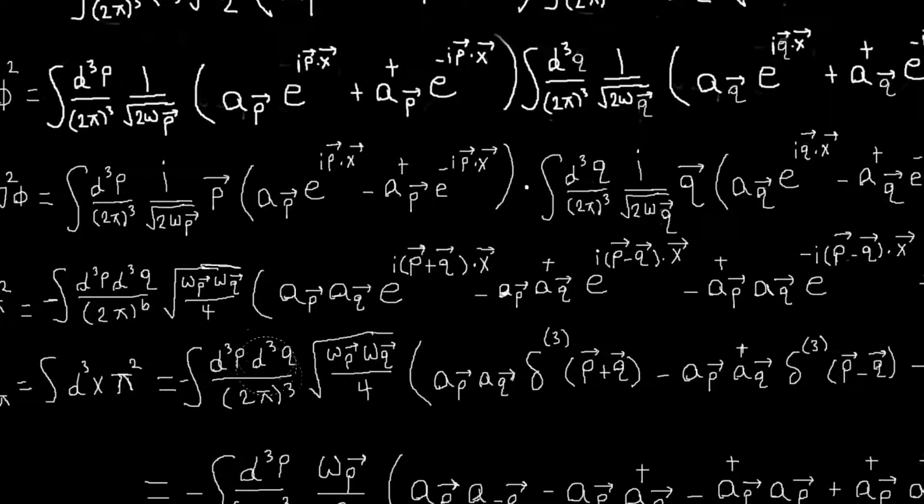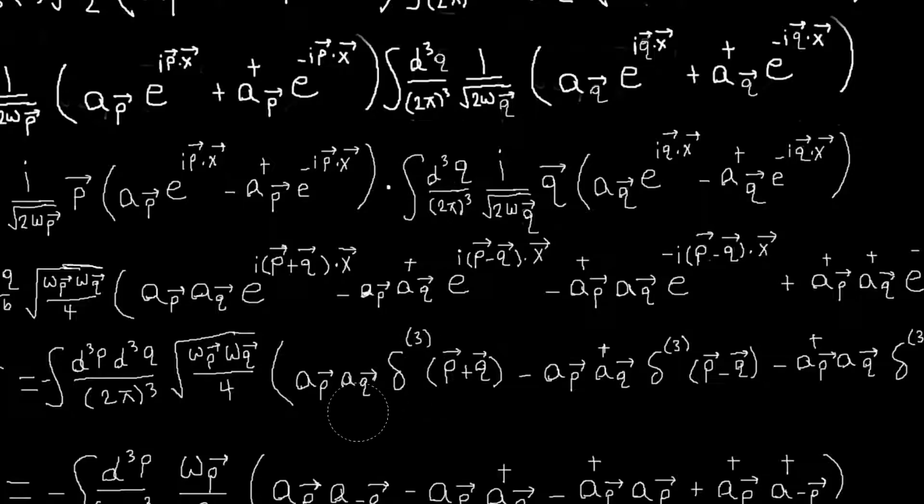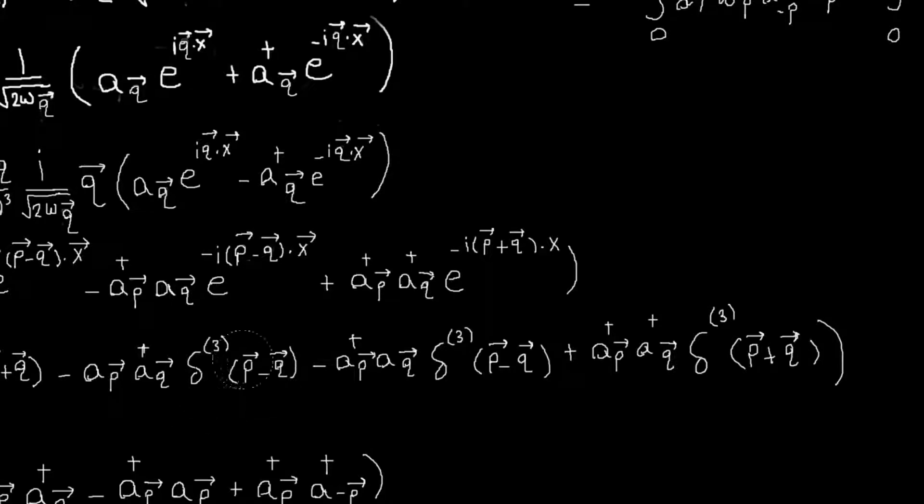And so now that we have this delta function here, each of these terms, we can do the integral over q and just replace. So in this term we'd replace q with minus p, and same for the last term. In these terms we'd replace q with just p.